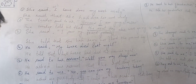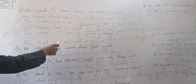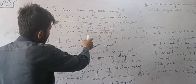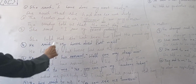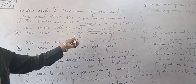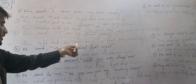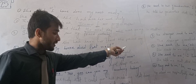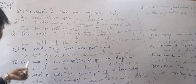She said: 'I saw my friend yesterday.' She told her that she had seen her friend the previous day. Notice the past tense 'saw' changes to past perfect 'had seen,' and 'yesterday' changes to 'the previous day.'